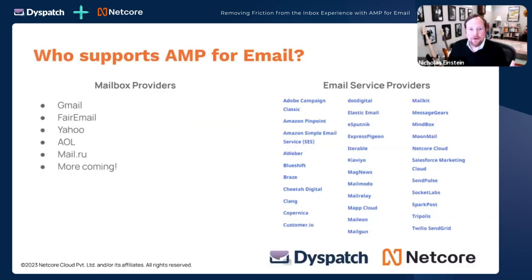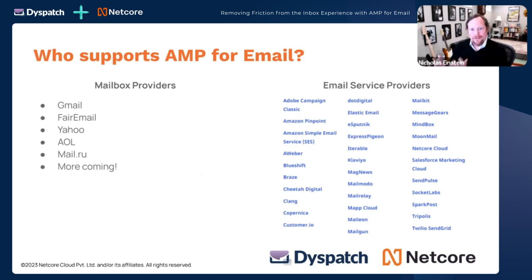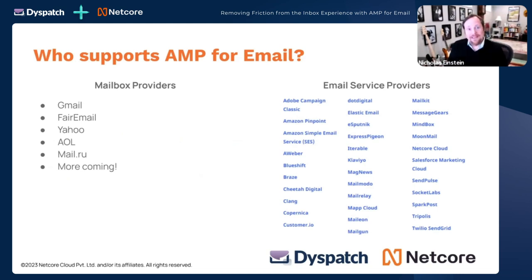A lot of the email community has supported AMP for email since it came out, with a window to support the additional MIME type to send a message. But I posit that until vendors like Dispatch and NetCore came along, it has been hard. The juice for some has not been worth the squeeze because it took a lot to get started.